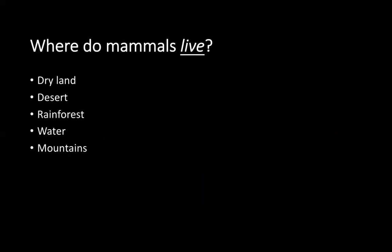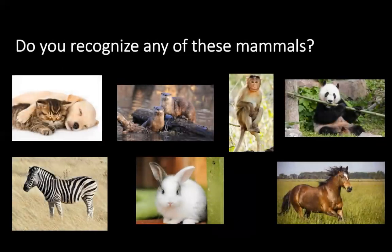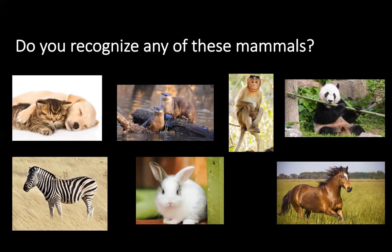Where do mammals live? Mammals live pretty much anywhere. They can live on dry land, in the desert or rainforest, in water, or in the mountains. Do you recognize any of these mammals? Some examples are dogs and cats, otters, monkeys, pandas, zebras, rabbits, and horses.